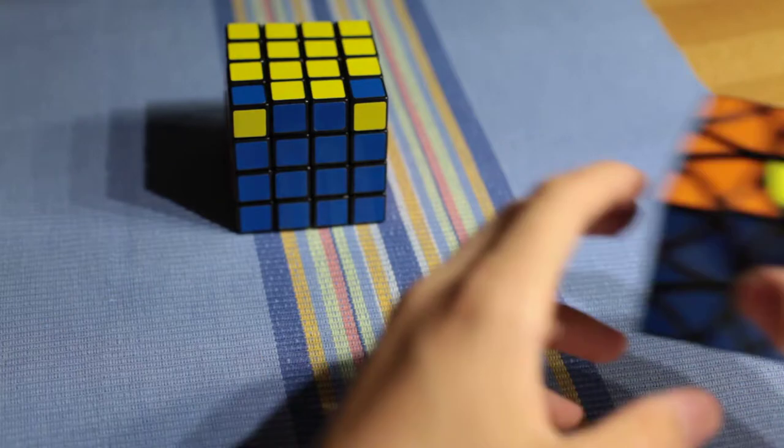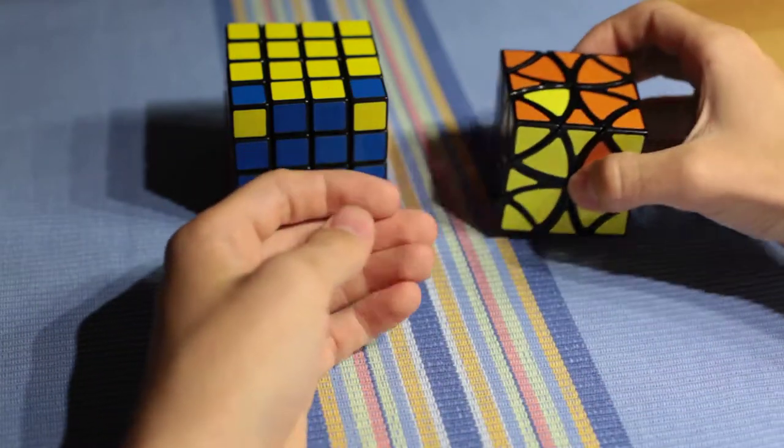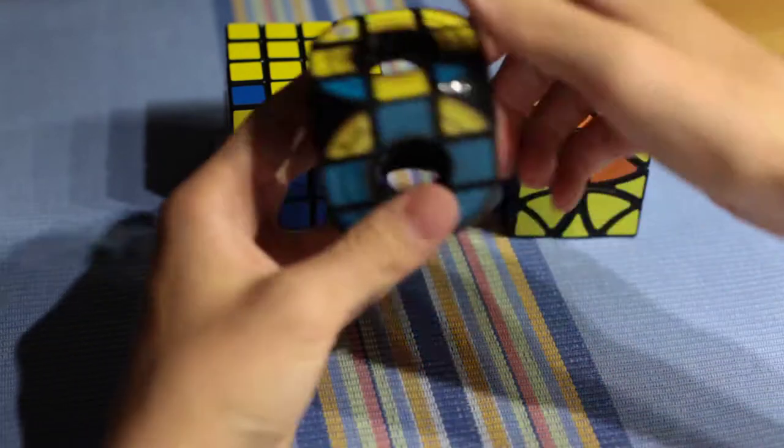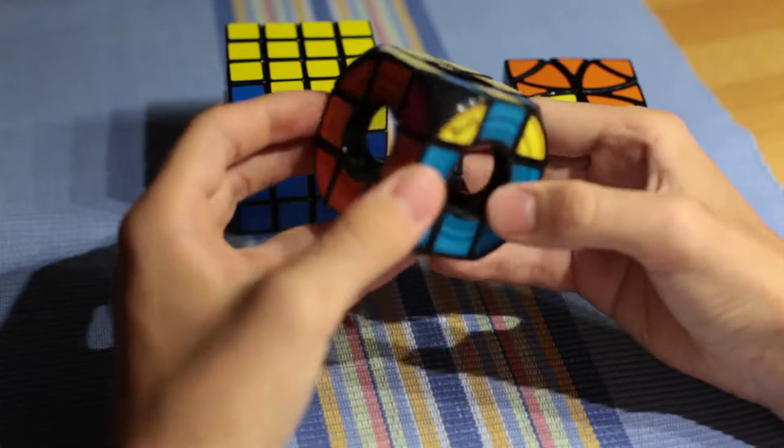But why do these different cubes behave so similarly? All of them have some pieces that are indistinguishable from others.